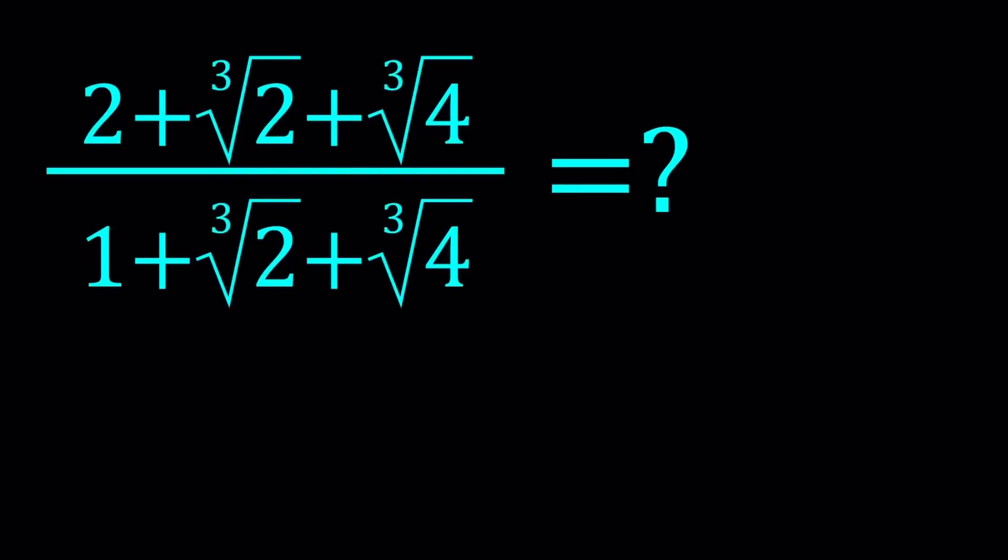Hello everyone. In this video we're going to be simplifying a radical expression. We have 2 plus cube root of 2 plus cube root of 4 divided by 1 plus cube root of 2 plus cube root of 4. I've seen the bottom expression in a book—I think there was a problem like rationalizing the denominator—but then I thought I could turn this into a nicer problem. And this is what I did.